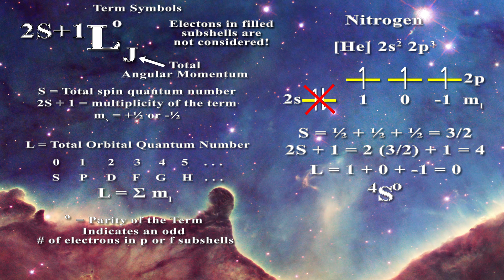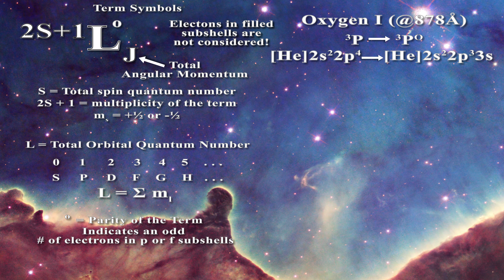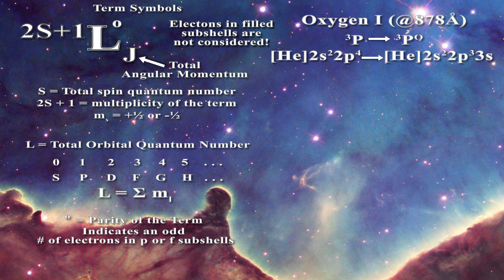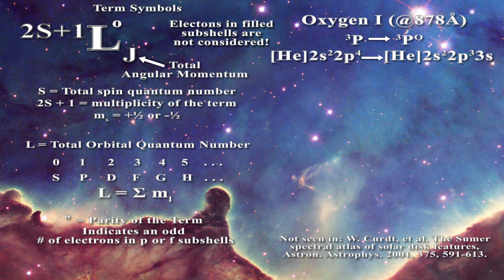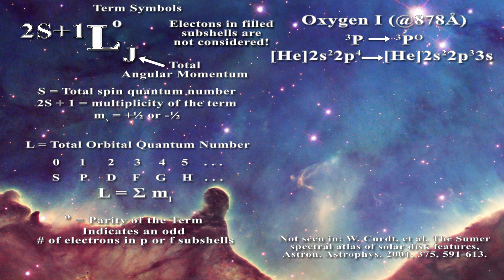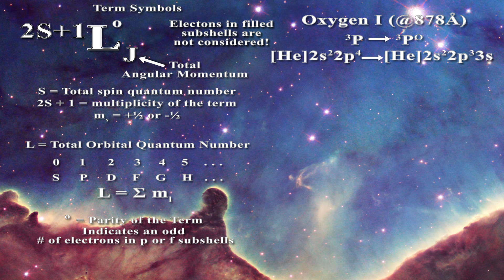Let us now look at a transition as reported by the NIST and see what term symbols are telling us about the electrons involved. For our example I have selected a transition for the neutral oxygen atom, seen in the laboratory but not observed on the sun. The transition occurs at 878 angstroms and involves a transition from the 2s2 2p4 ground state of oxygen to the 2s2 2p3 3s excited state. The term symbols are given by NIST as triplet P for the ground state to triplet P with parity indicated by the superscript O for the excited state.